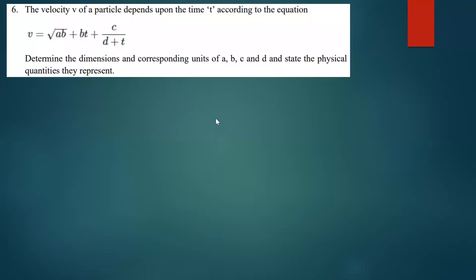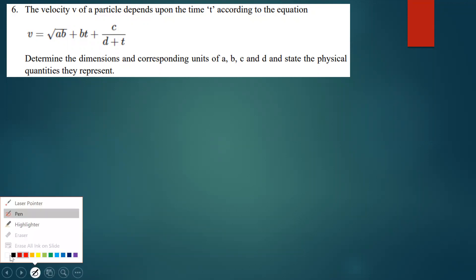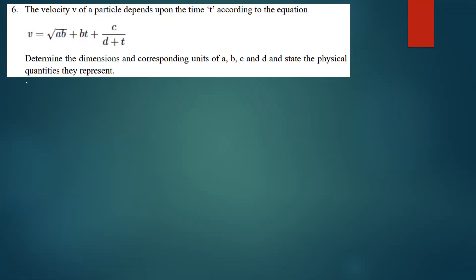The question states that the velocity V of a particle depends upon time t according to a given equation. We must determine the dimensions and corresponding units of A, B, C, and D, and state the physical quantities they represent. The equation given is V equals the square root of A times B, plus B times T, plus C over the quantity D plus T.